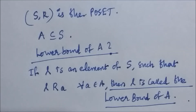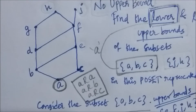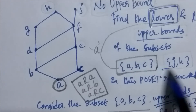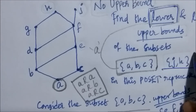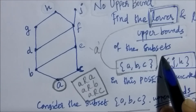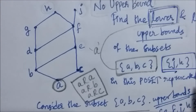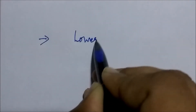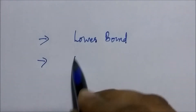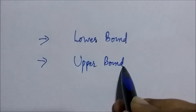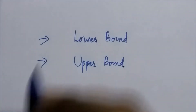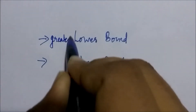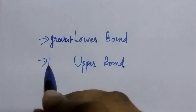Consider the set {j, h} — as an exercise, try to find the lower bound for this set. So far we have seen what is a lower bound and upper bound for a subset of a partially ordered set. Now we are going to talk about the greatest lower bound and least upper bound.